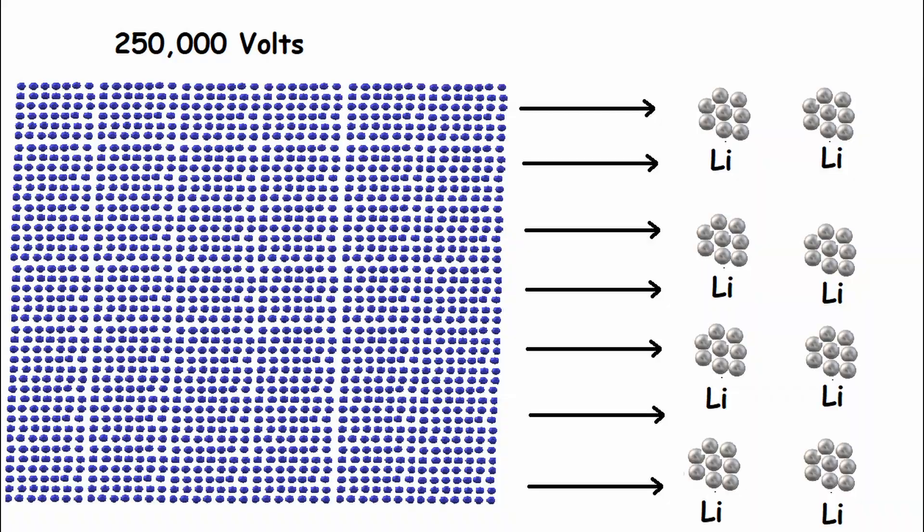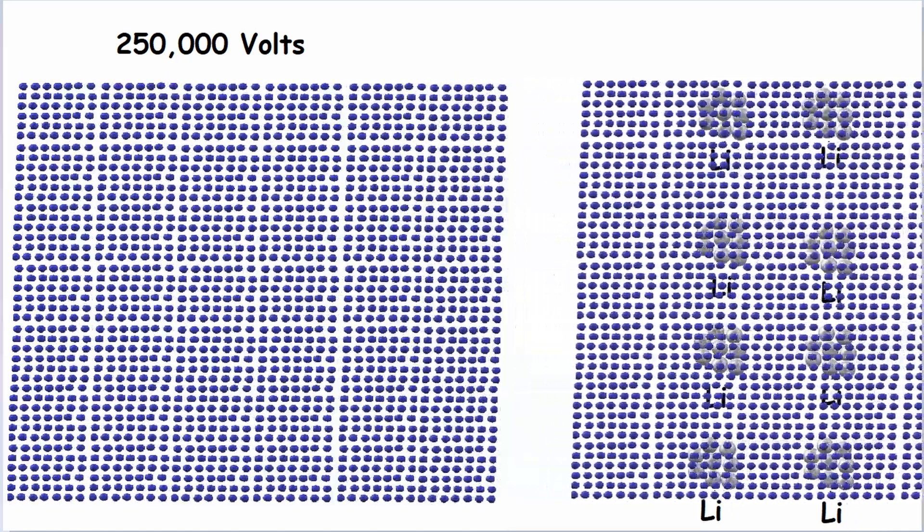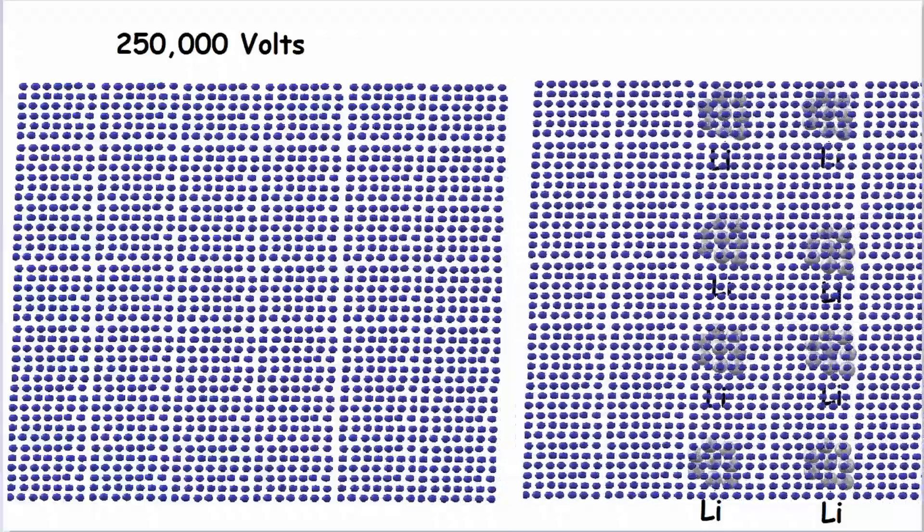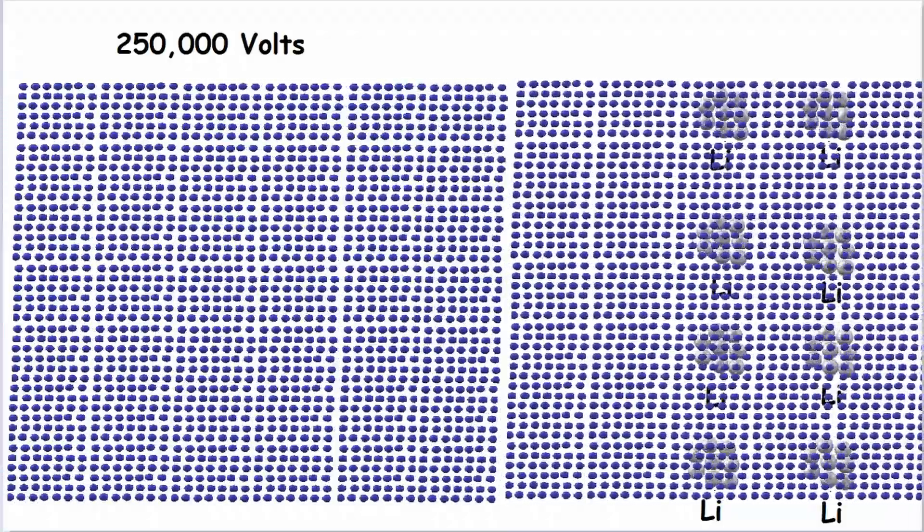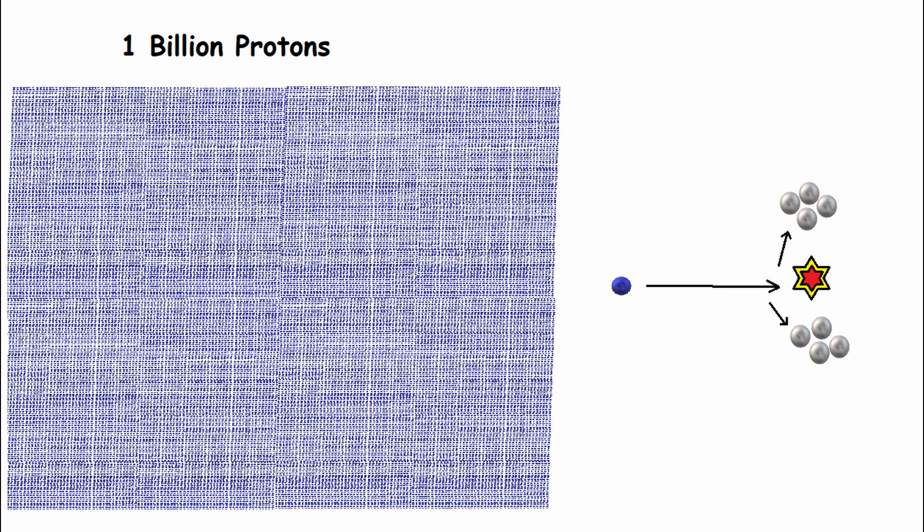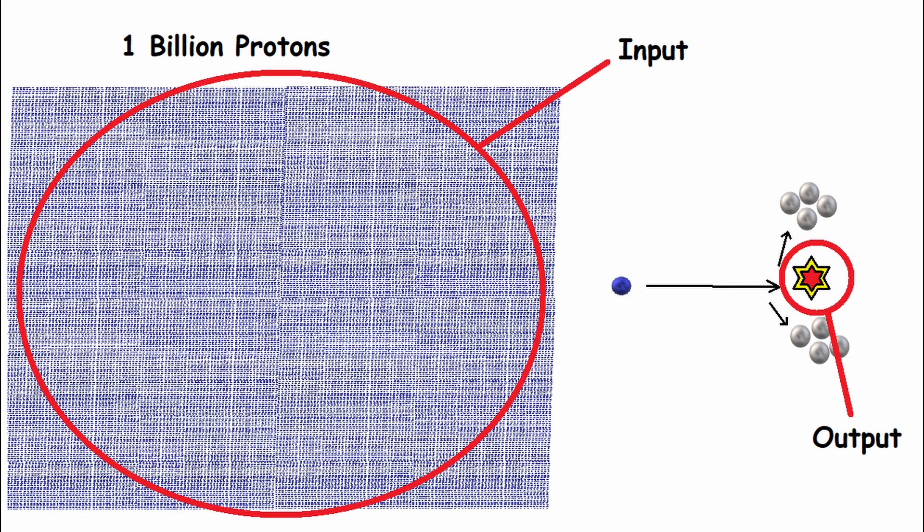But Cockroft and Walton were able to overcome that obstacle by using 250,000 volts to accelerate the protons. By using high voltage, they drastically increased the likelihood that a collision would occur. But even then, only about one in a billion protons successfully collided with and split a lithium nucleus. So this was clearly not a good strategy for harnessing energy, as the energy input was far greater than the energy output of the experiment.